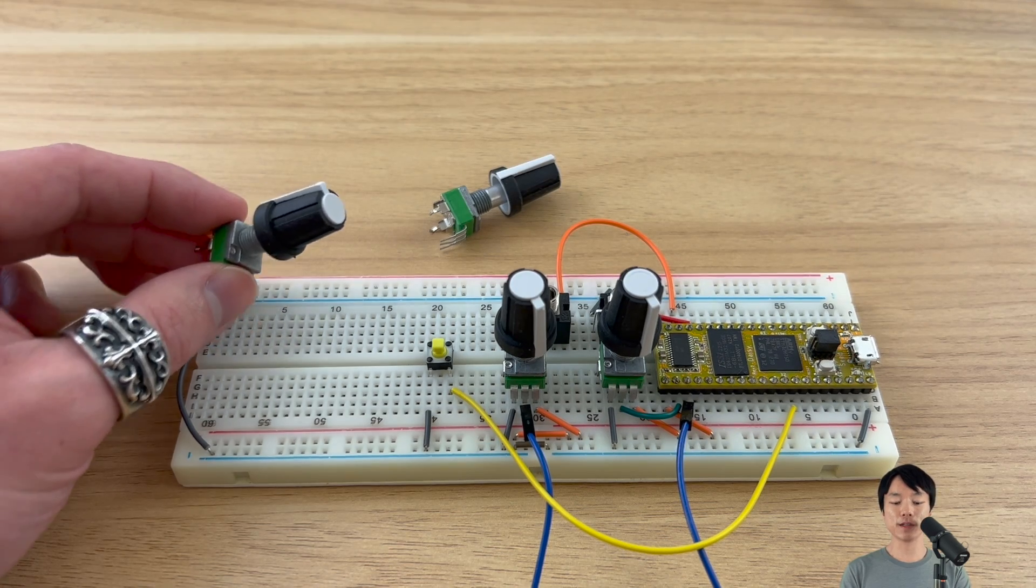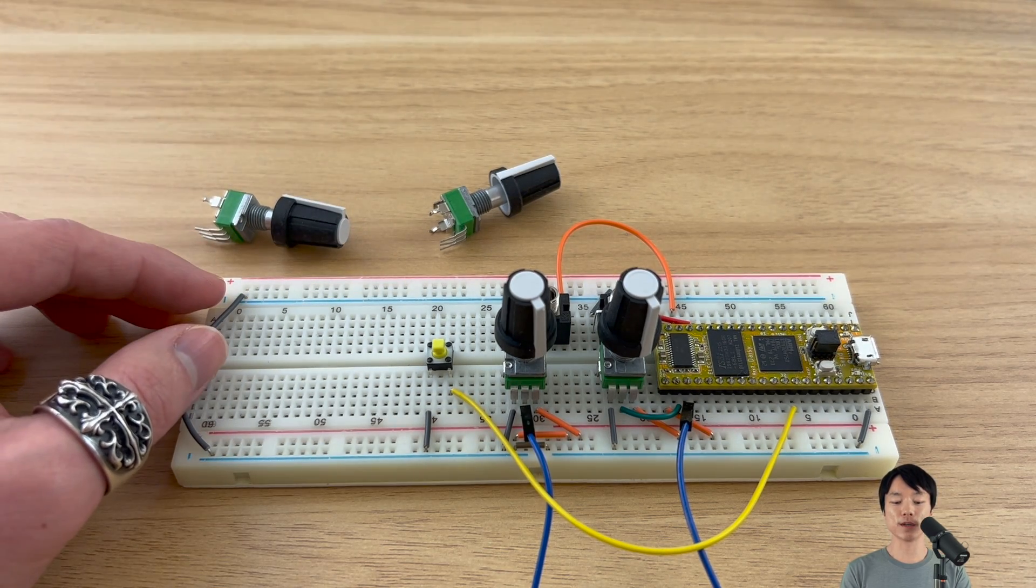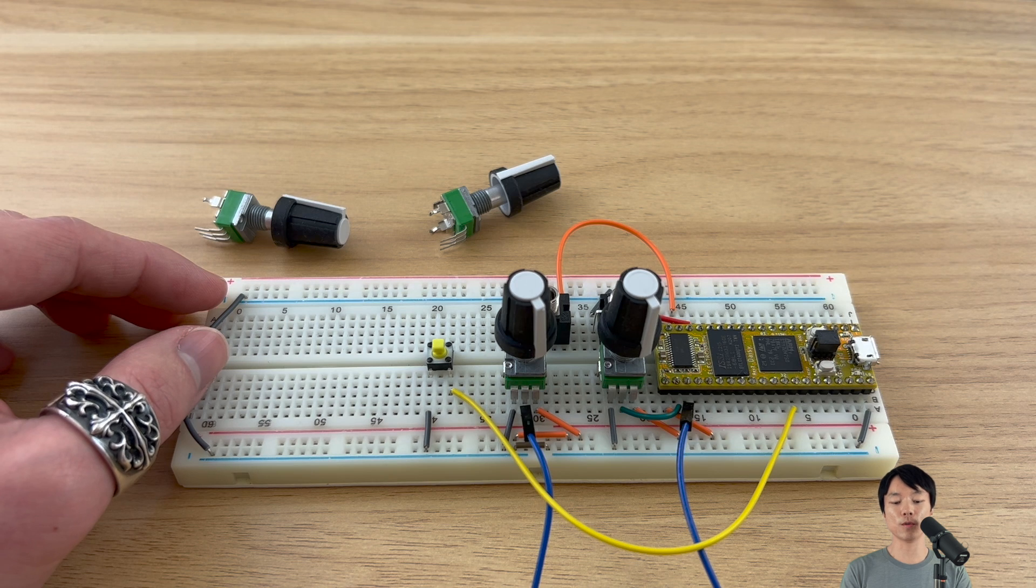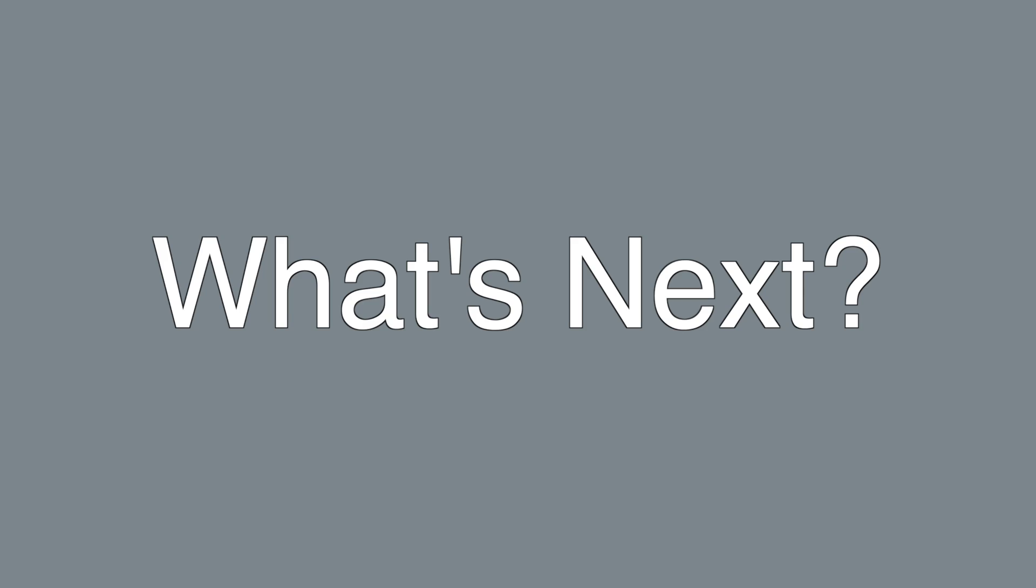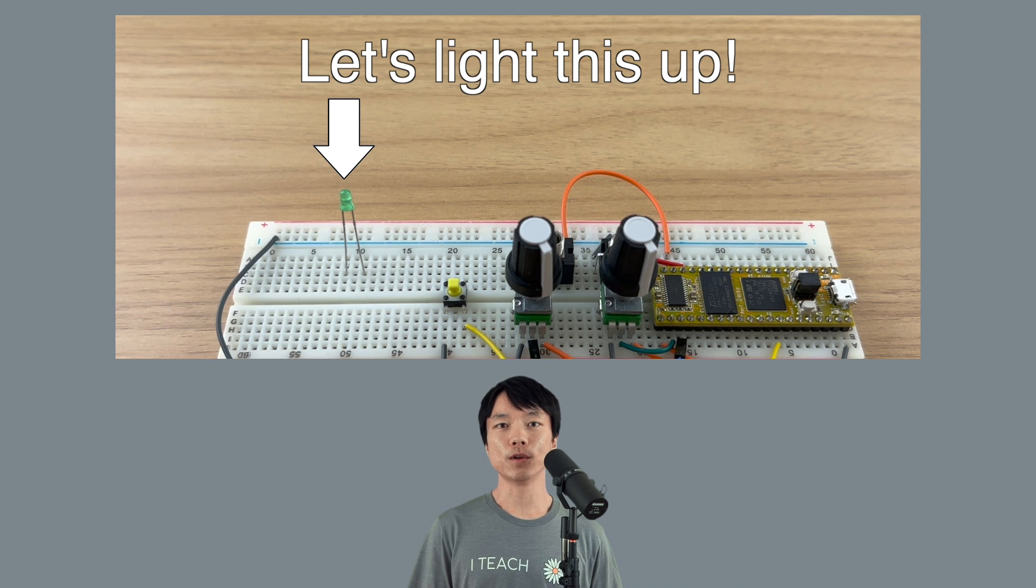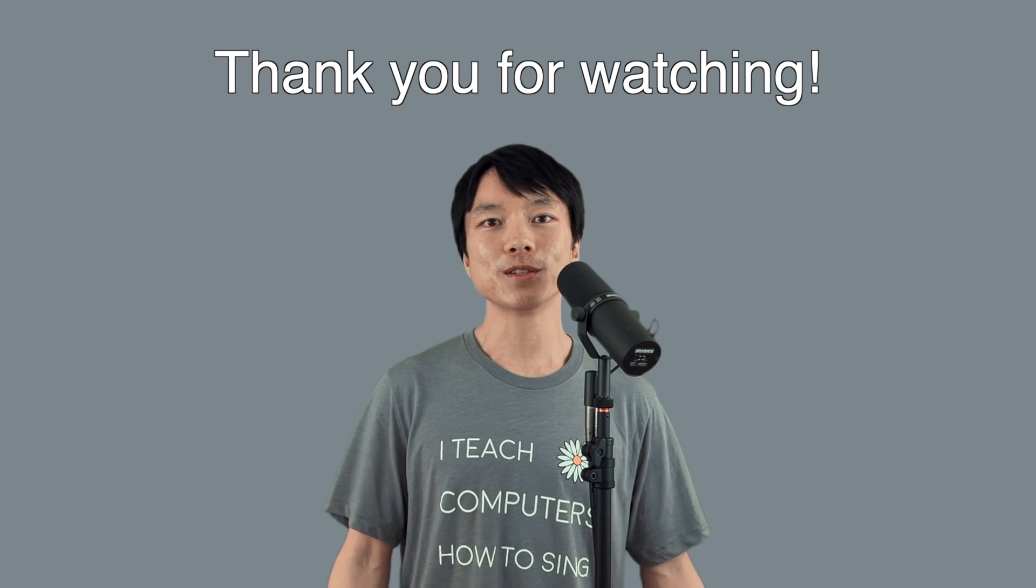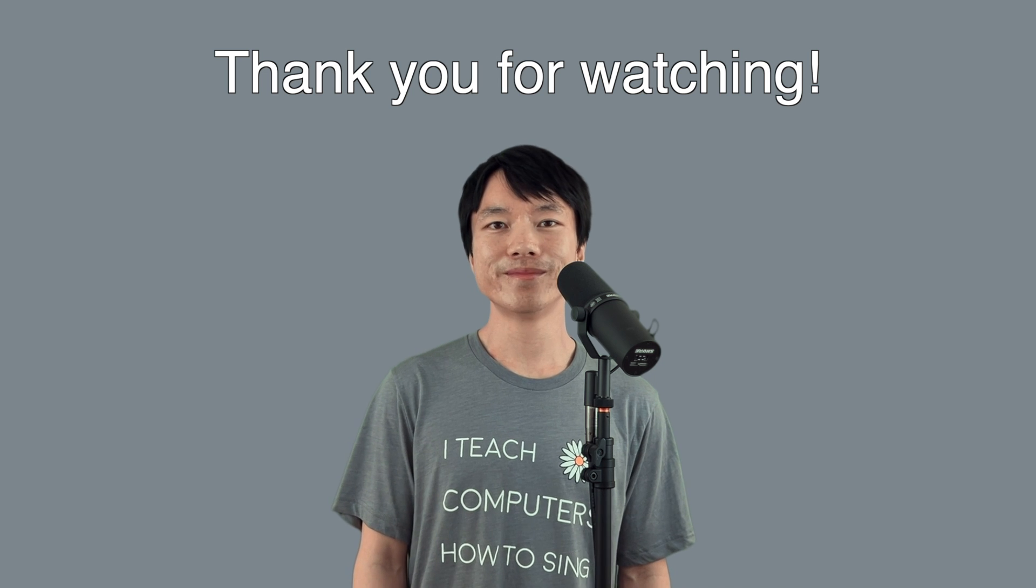As you can imagine, it will be fun to connect two more potentiometers to our synth and have real-time control over the ATTACK and RELEASE times. Now that we can trigger a sound with a button, what's next? In the next tutorial, let's learn how to light up an LED so that we can add visual feedback to our synth. Okay, I'll see you in the next video. Take care.